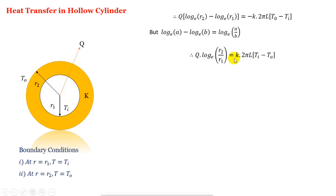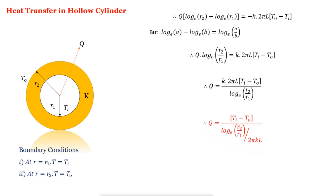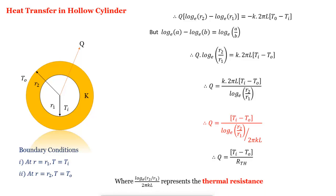Moving the minus sign inside the bracket gives Q·ln(R2/R1) equal to K·2πL·(Ti minus To). Moving ln(R2/R1) to the denominator gives Q equal to K·2πL·(Ti minus To) / ln(R2/R1). Moving 2πKL to the denominator gives Q equal to (Ti minus To) / [ln(R2/R1) / 2πKL]. This looks like Q equal to (Ti minus To)/Rth, so the thermal resistance of the hollow cylinder is Rth equal to ln(R2/R1) / (2πKL).